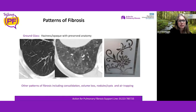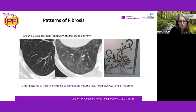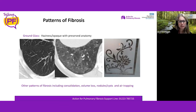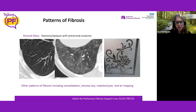Another type is ground glass — a haziness or milkiness of the lung. Normal lung appears black, but lung with ground glass looks milky, like a pub window that's been ground down. When we see that, we know there's abnormal lung, but we can still see vessels and airways through it. There are many other patterns, but we don't have enough time to cover them all today.